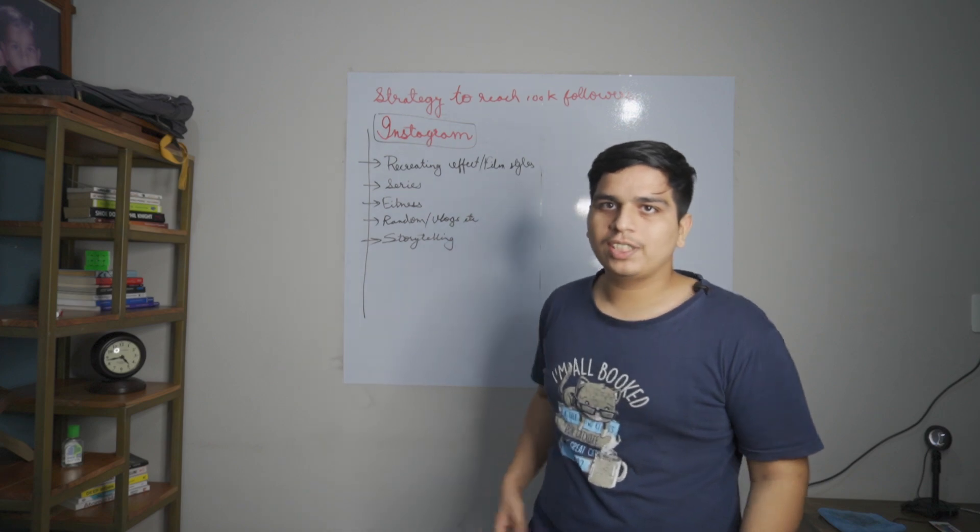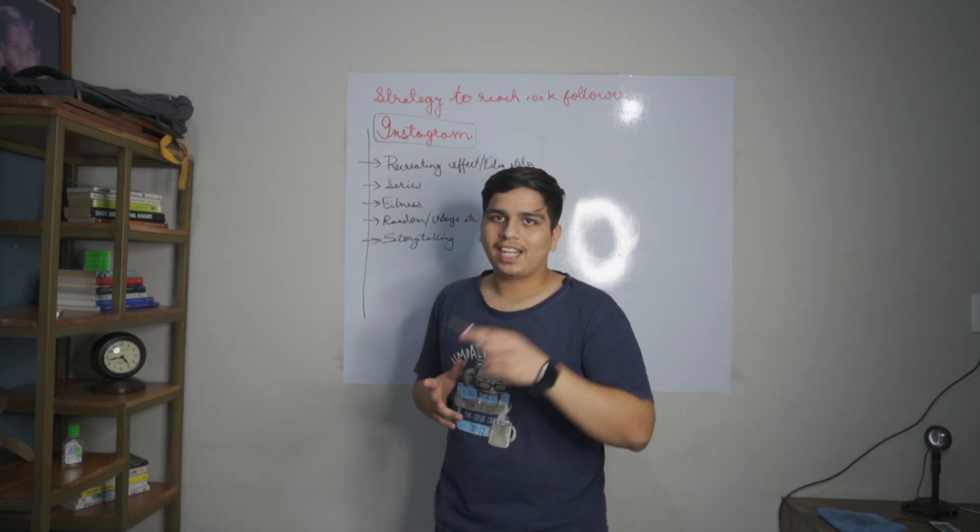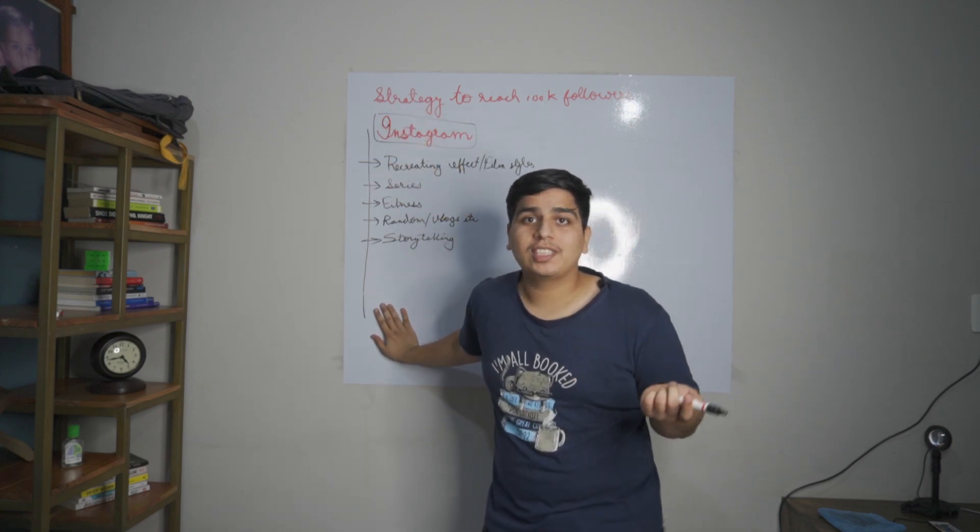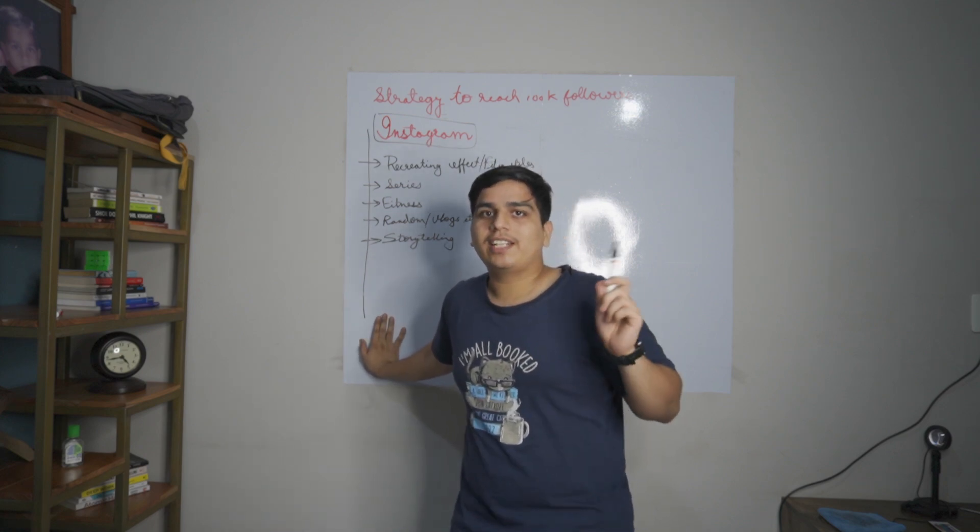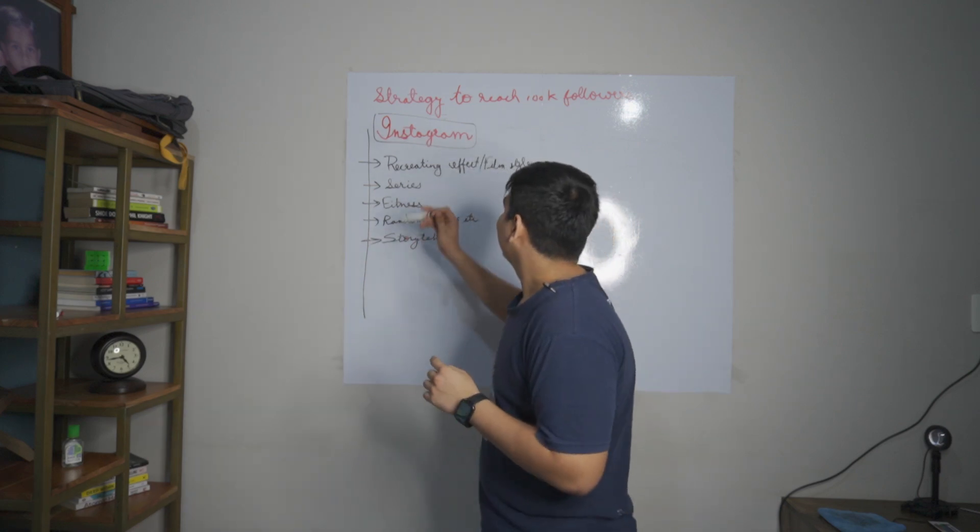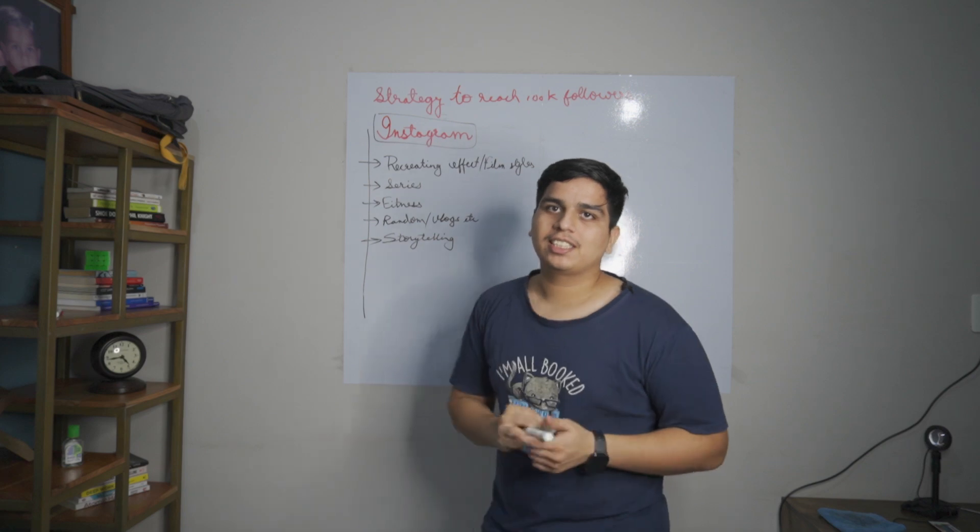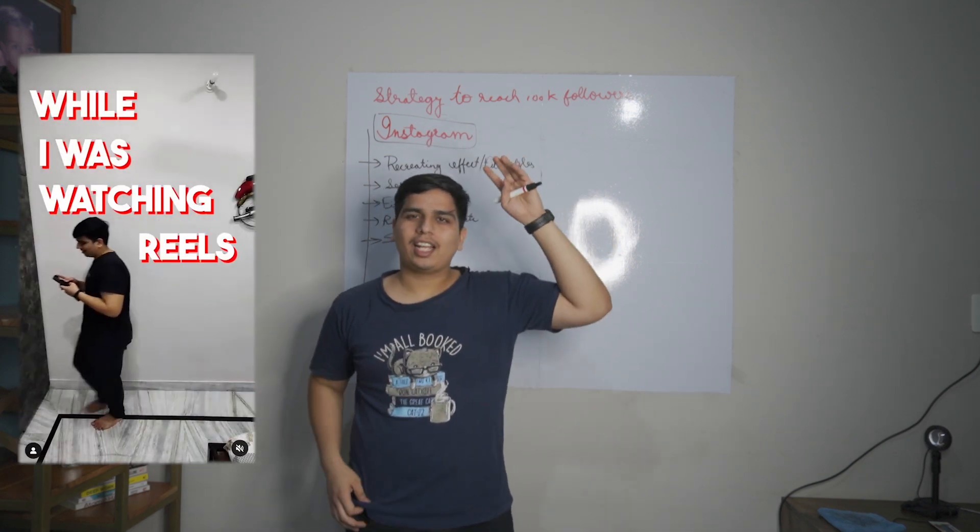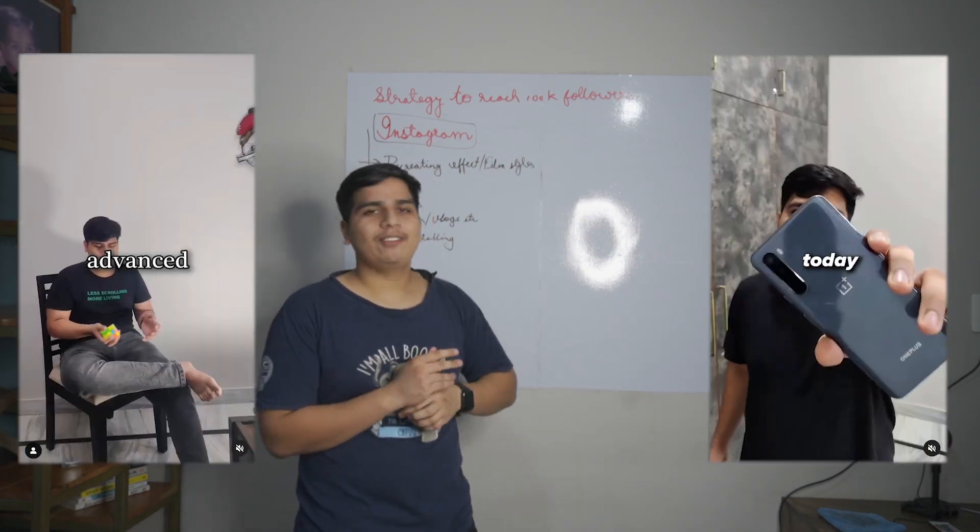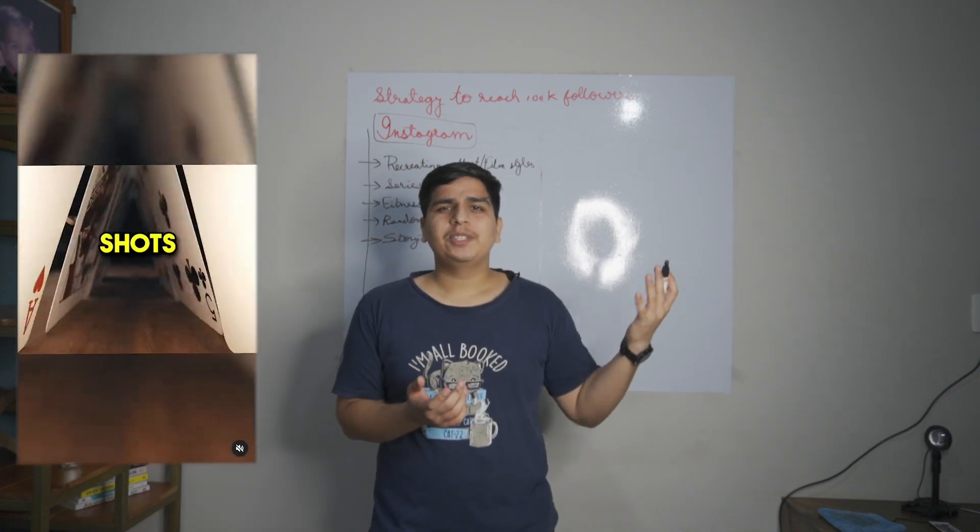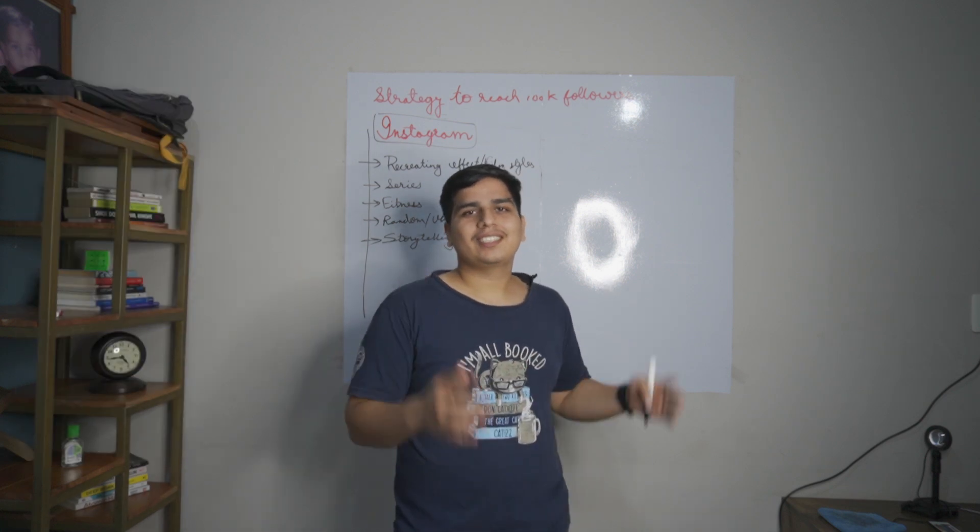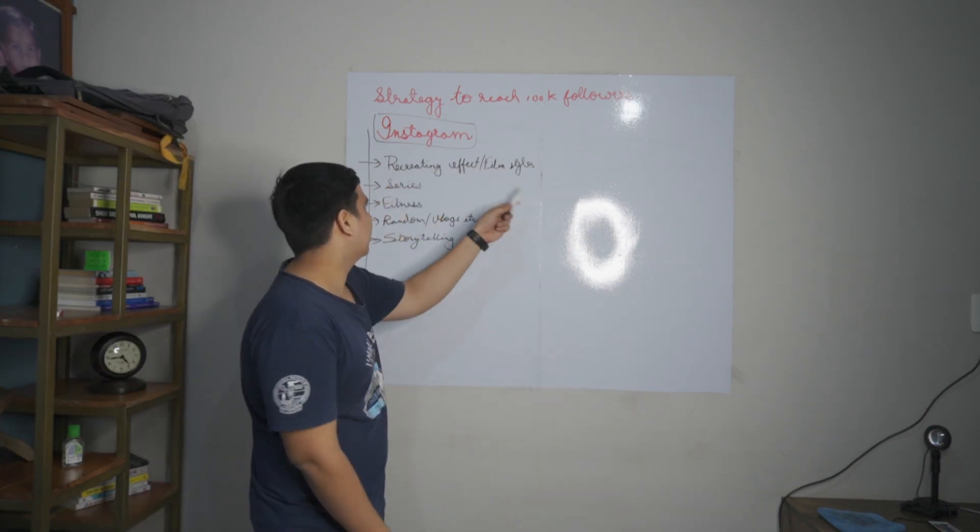I have written some points. I have made a list of type of content that I want to make and the type of content I have already made. One of the major videos that I have made are recreating effects and film styles, which includes - I'll be putting the screenshots on the screen or the videos that I made. I saw some film effect, some video editing effect, and I try to recreate it in my video and document the process. That's the videos I generally make.